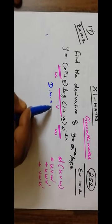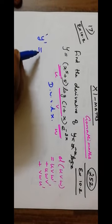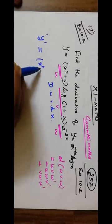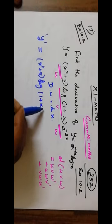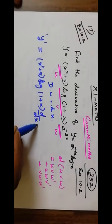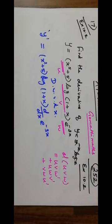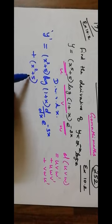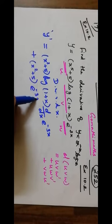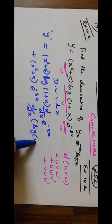Now differentiate here with respect to x. So we keep the first term as usual, then log of 1 plus x — this is what we need to differentiate. D by dx of e power minus 3x.